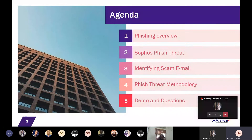Our agenda for today is: first, a phishing overview — what phishing really is and what harm can be done to organizations through phishing. Then we go to Sophos Phish Threat as a product for mitigating phishing and training our end users. Next, we'll identify scam emails, showing the possible patterns and how they look to end users. Then we cover Phish Threat methodology, teaching how it works. Finally, we dive into the demo and take questions.